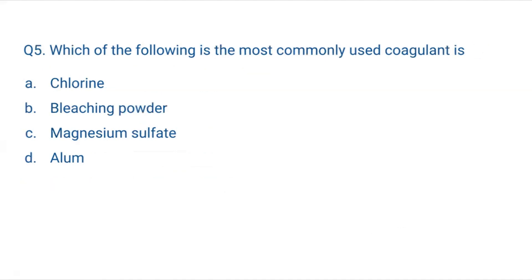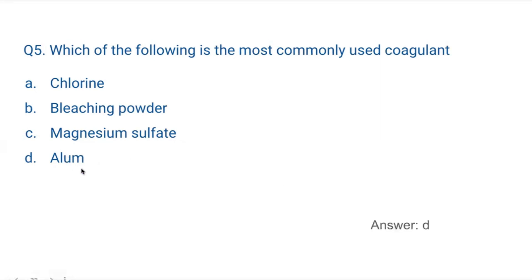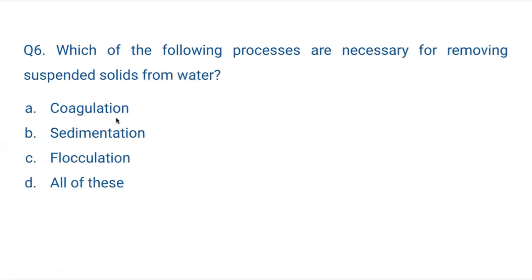Question 5: Which of the following is the most commonly used coagulant? Chlorine is not a coagulant — it is a disinfectant. Bleaching powder (CaOCl₂) is also a disinfectant. Magnesium sulfate and alum are both coagulants, but alum is the most commonly used coagulant.